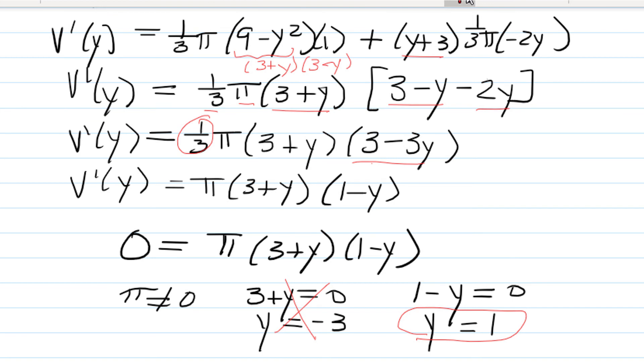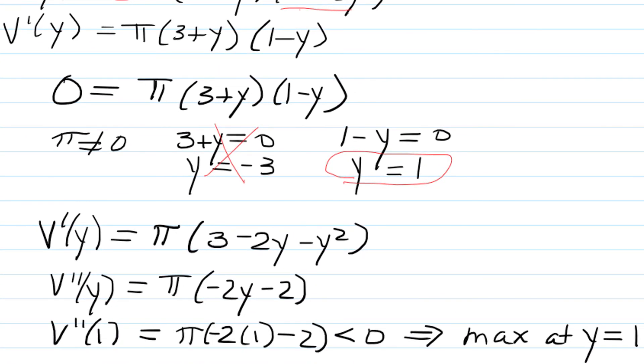Now let's apply the second derivative test for extrema to confirm that this is a max. I'm going to rewrite my first derivative by multiplying out (3+y)(1-y), which gives me (3-2y-y²)π, and then take the derivative of the derivative, so the second derivative, which gives me π(-2y-2).